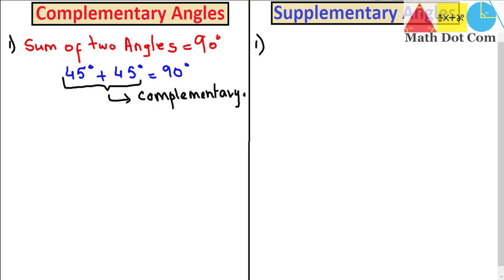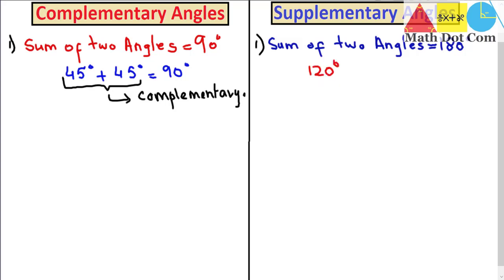Now, what are supplementary angles? If the sum of two angles is equal to 180 degrees, then the two angles are said to be supplementary angles. For example, if one angle is 120 degrees and the other is 60 degrees, and their sum equals 180 degrees, then we can say that these two angles are supplementary angles.